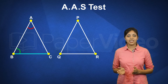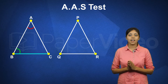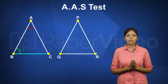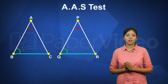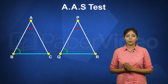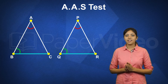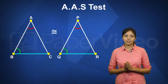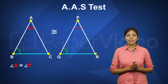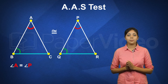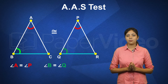then the triangles are congruent. This means that if angle A equals angle P, and angle B equals angle Q,